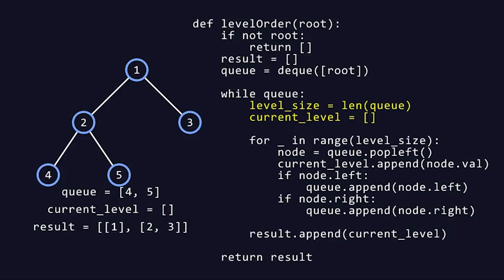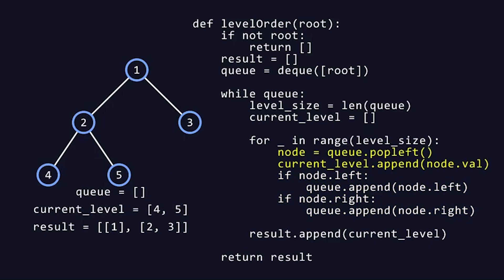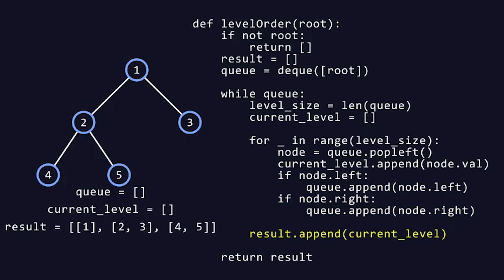The function then checks if the current node has left and right children. If the left child exists, it is added to the queue. Similarly, if the right child exists, it is added to the queue. This ensures that all children of the current node will be processed in the next iteration of the while loop. After all nodes at the current level have been processed, the current_level list is added to the result list. Finally, once the while loop is complete and all levels of the tree have been processed, the function returns the result list, which contains the values of all nodes level by level.